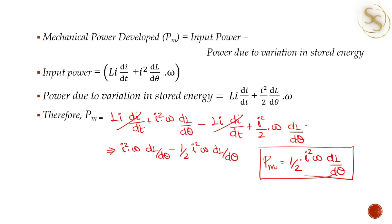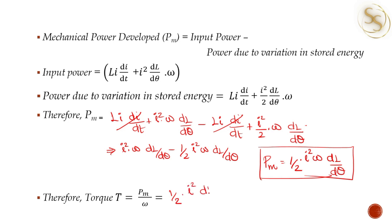The final equation for mechanical power is P_M equals ½ times I² times omega times dL/dθ. The equation for torque is T equals P_M divided by omega. Substituting, we get the final torque equation: T equals ½ times I² times dL/dθ.